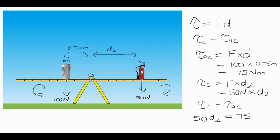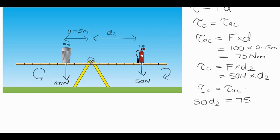So finally, the very last step in this working is to rearrange for d2. d2 will be equal to 75 divided by 50, so 75 divided by 50 works out to be 1.5 meters.